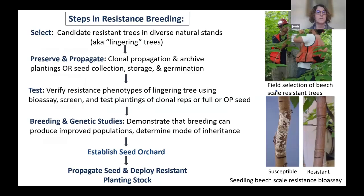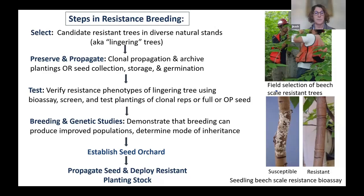The actual steps in breeding — very compressed and simplified — start with selecting candidate resistant trees in diverse natural stands, also called lingering ash trees. The next step is to preserve and propagate them, either by clonally propagating trees once selected and planting them in archive plantings using insecticides to keep them alive, or by doing seed collections and germinating the seed. The next very important step is testing — verifying or phenotyping — to verify resistance phenotypes and distinguish resistant from susceptible trees using bioassay screens, test plantings, using clonal replications or open-pollinated seed, or controlled cross-pollinations.